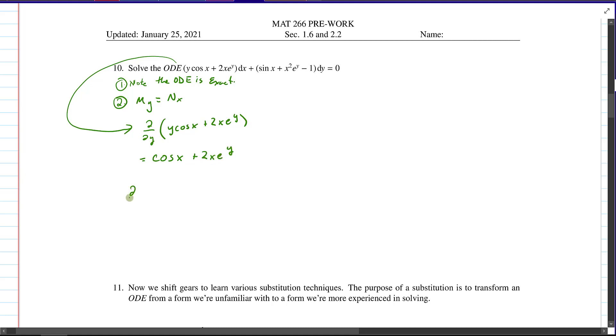And if we take the partial derivative of this expression with respect to x, so if we take the partial derivative of the sine of x plus x squared e to the y minus 1, well, we end up with the partial derivative of sine of x with respect to x is the cosine of x. The partial derivative of x squared e to the y, well, e to the y gets treated as a constant, so we just get 2xe to the y. And of course, the derivative of a constant, regardless of the respective variable, is always a zero. And so sure enough, these two expressions equal each other. We've shown this, so yep, we do in fact have an exact ODE.